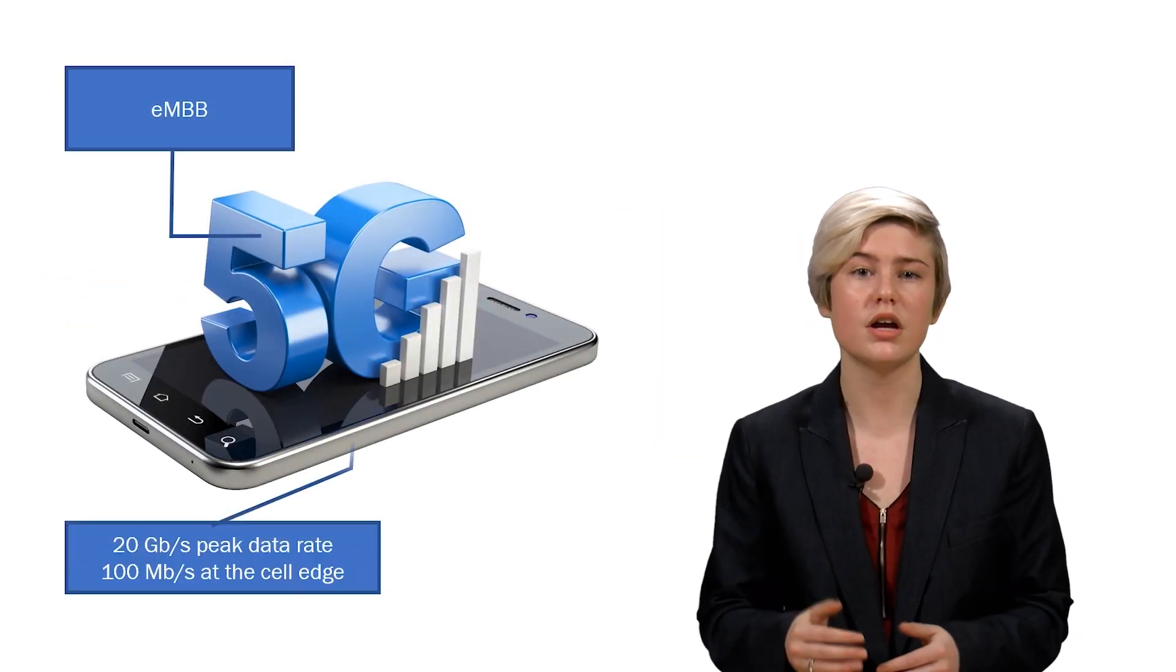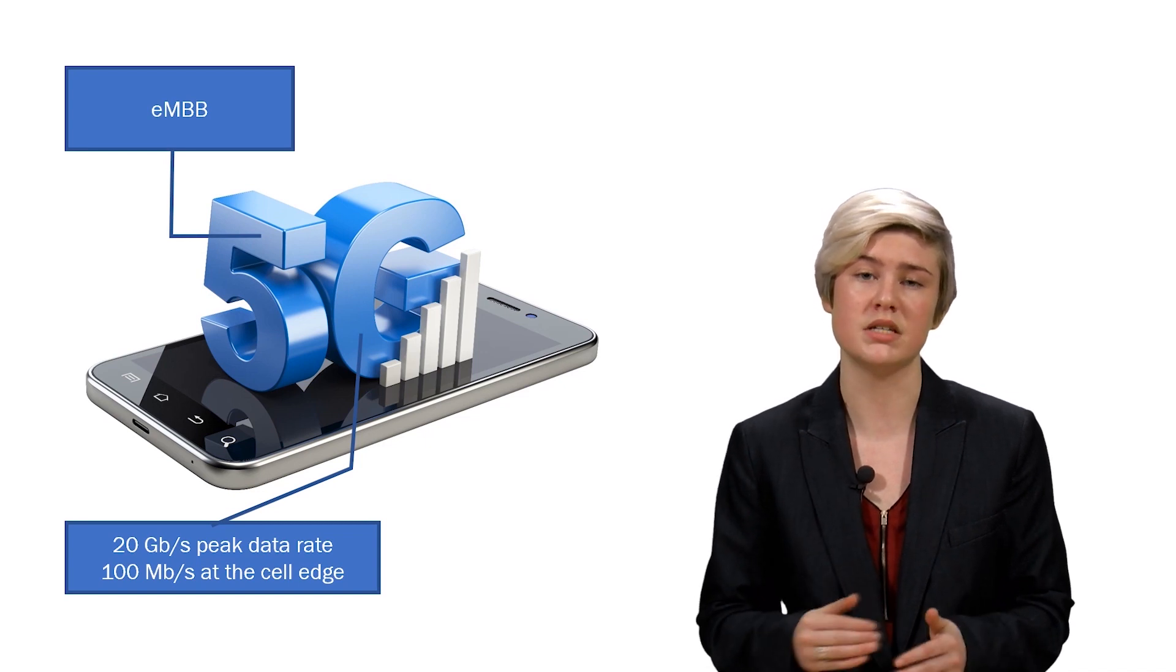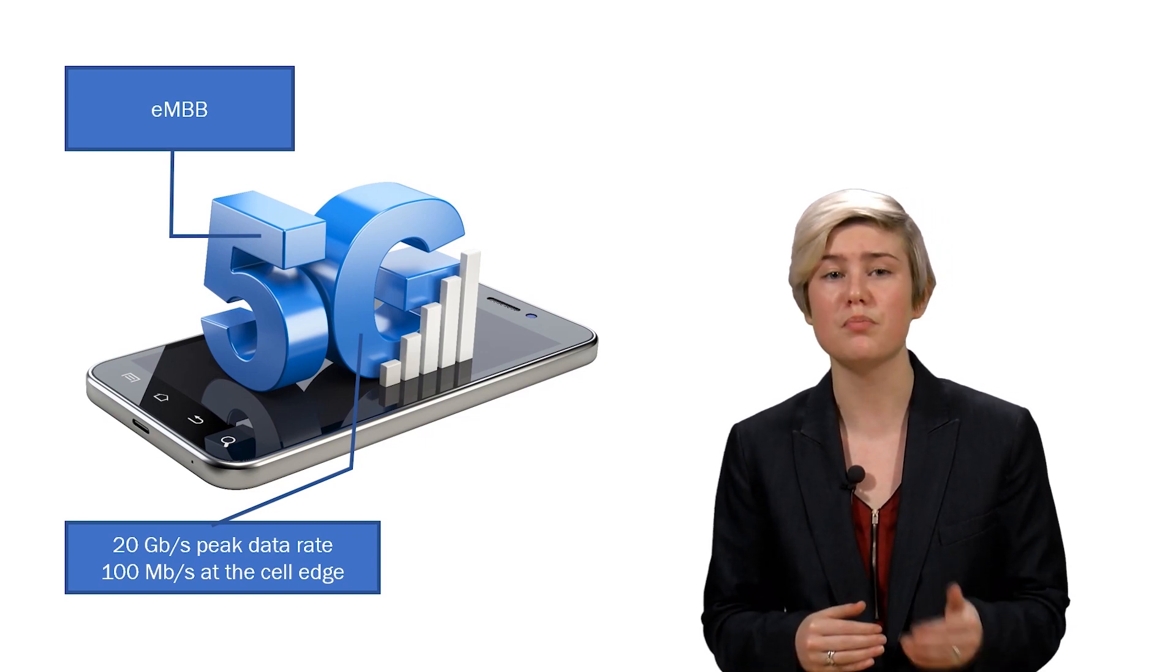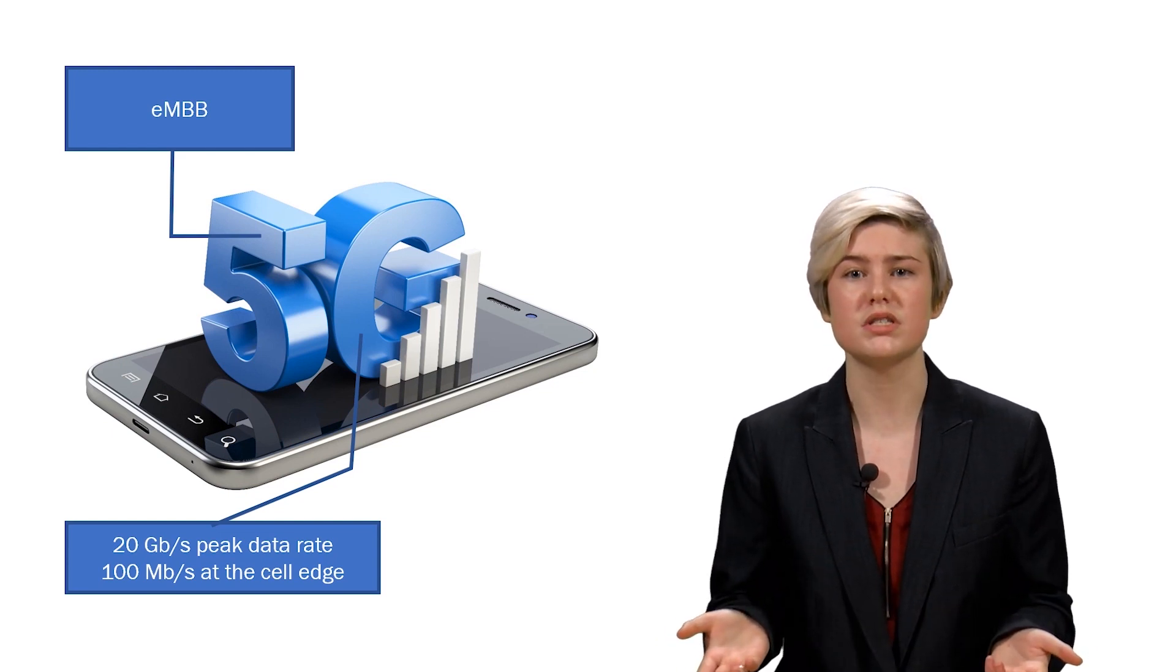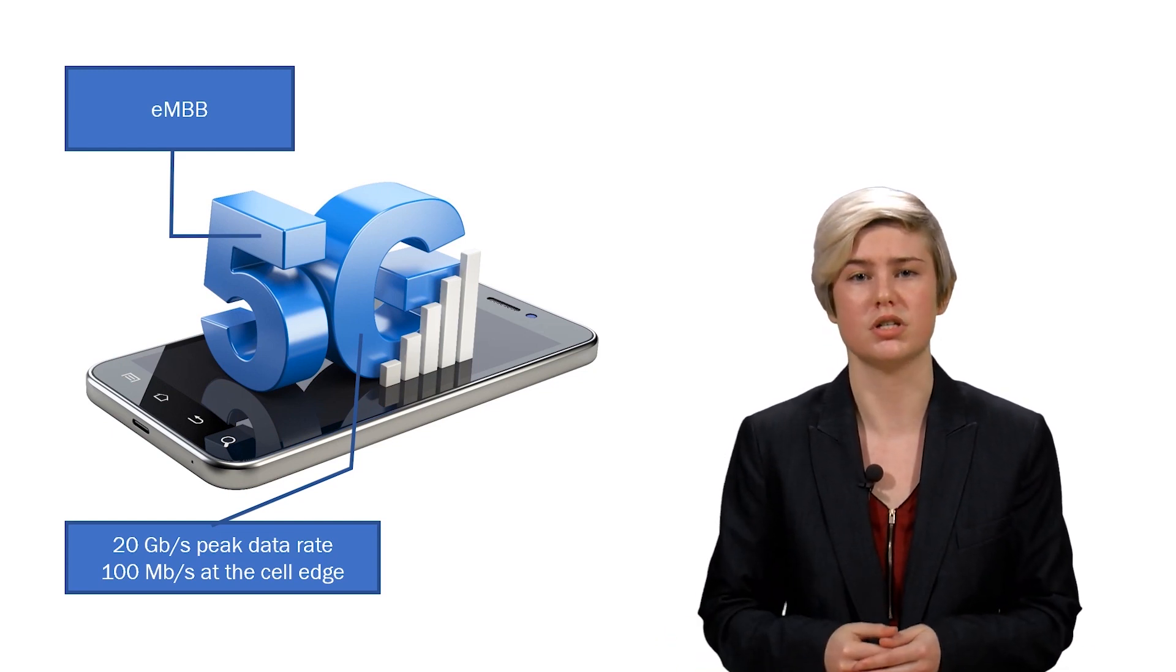For EMBB, our target was 20 gigabits per second peak data rate and about 100 megabits per second at the cell edge. How is having this new frequency range going to help us accomplish this?